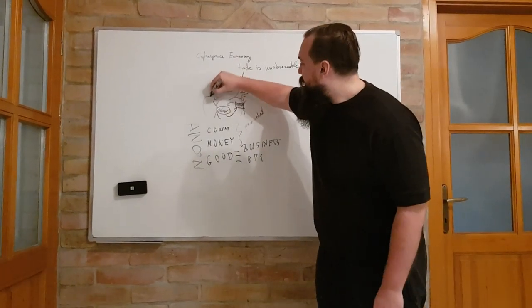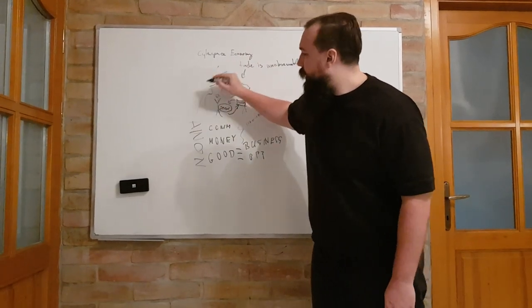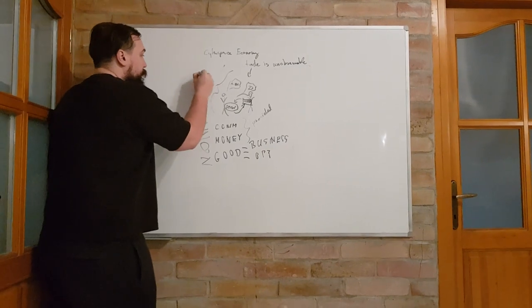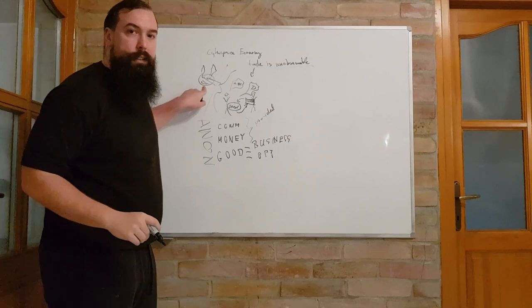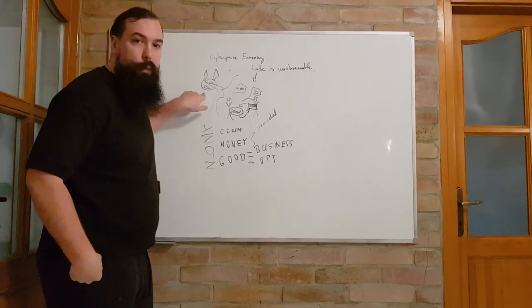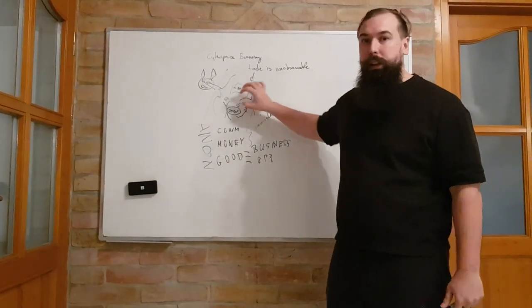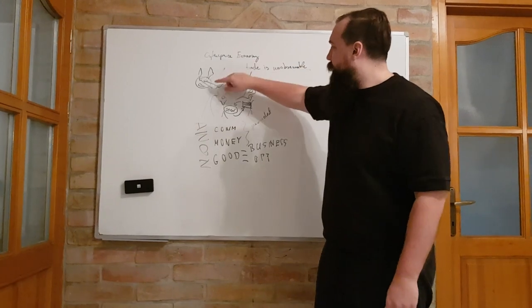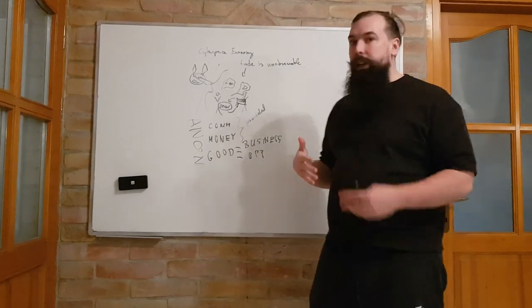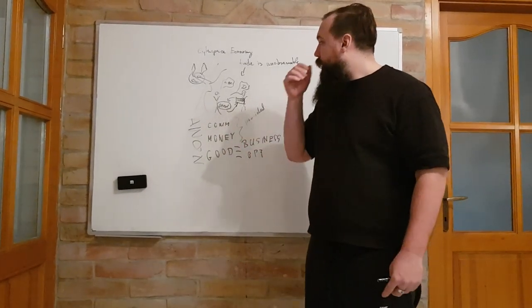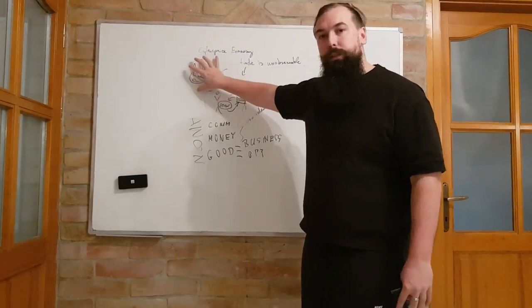What this results in is that the trades are not going to be observed anymore by the evil third party who actually has meatspace violence monopoly against the parties who are transacting. If we cut this off, if they cannot see what's happening, then we will have an economy that is not limited by the violence organizations of meatspace.